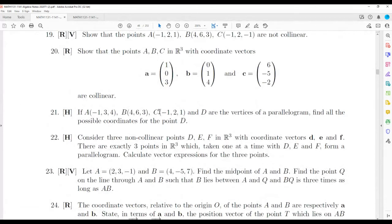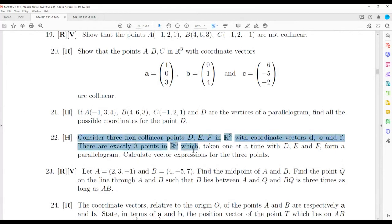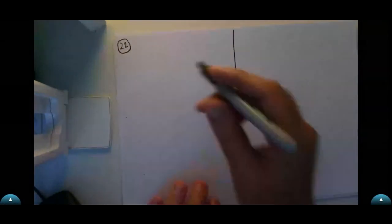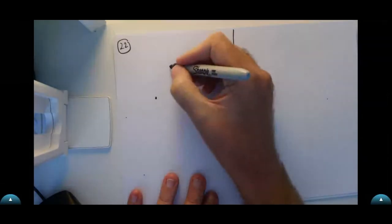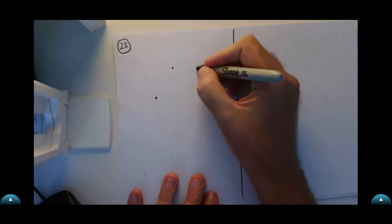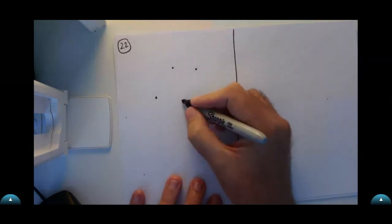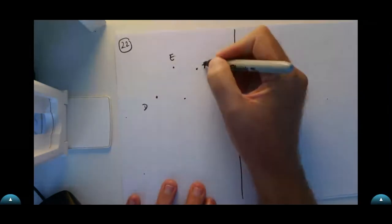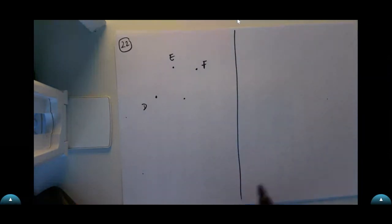The key with question 22 is to draw a picture. We've got points D, E and F. Let's go D, E, F and put the fourth point there — this is only one of the solutions; there are three different cases to consider but I'll only do one. This fourth point will be X.